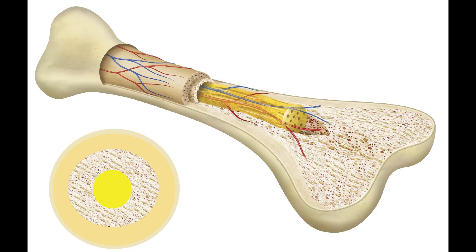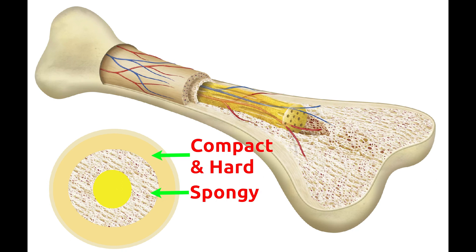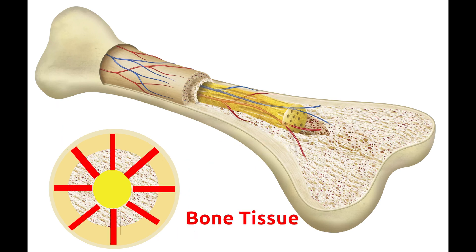Bone tissue: Bone is made of layers of hard and soft materials. The outer part of bone is hard whereas the inner part is spongy. In addition to hard and spongy parts, bones have bone marrow and periosteum. Bone marrow is the innermost part of the bone, whereas periosteum covers the bone from outside. The part of bone between marrow and periosteum is made of bone tissues.